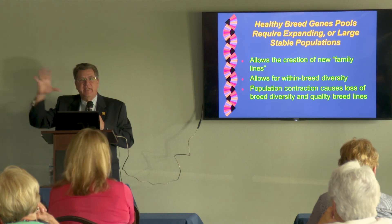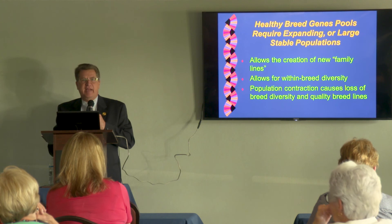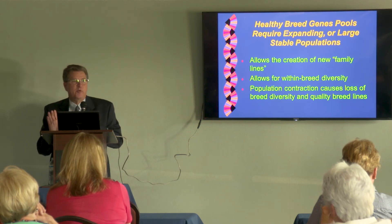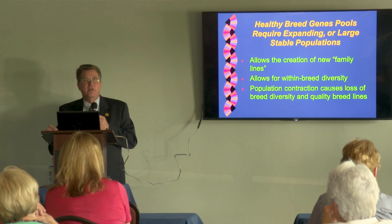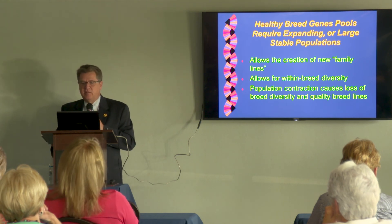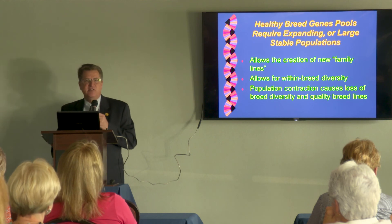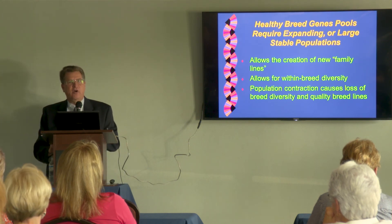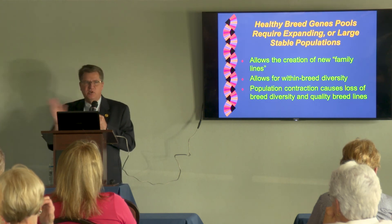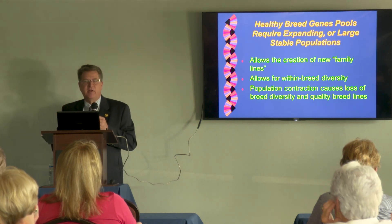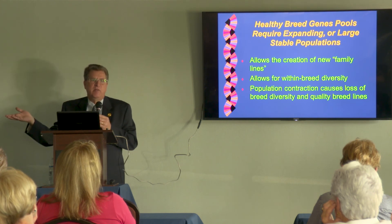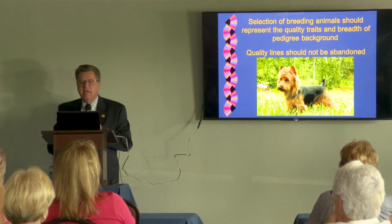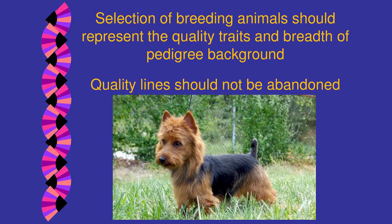If in a contraction we lose lines — if senior breeders with excellent lines stop breeding and no one continues those lines — that's a bad thing. A large, stable, or expanding population allows the creation of new family lines, allows for within-breed diversity, which is important. You don't want to homogenize your breed by everyone outbreeding, because then you lose the differences between dogs needed for selection. Population contraction causes loss of breed diversity in quality breed lines. Selection of breeding animals should represent quality traits and the breadth of pedigree background. Quality lines should not be abandoned.